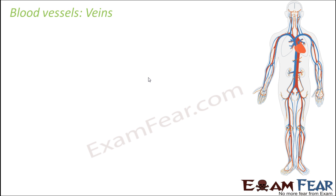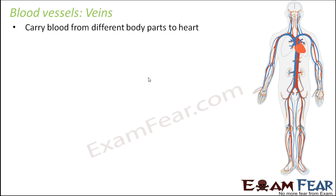Let us now talk about the next blood vessels — veins. Veins carry blood from different body parts to the heart, just the opposite of arteries. Arteries carry blood from heart to other body parts, and veins carry blood from other body parts to the heart — just the reverse. Veins generally carry deoxygenated blood.